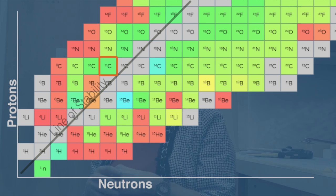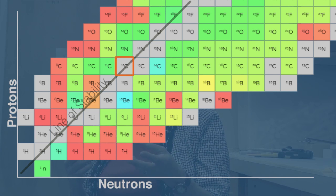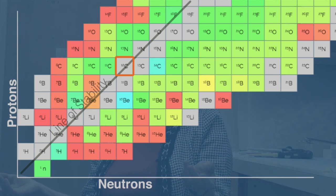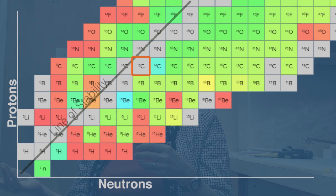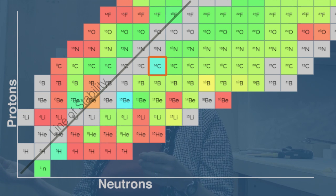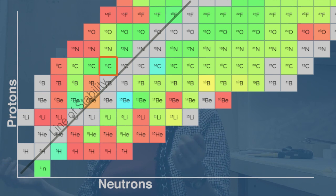So carbon-11 has a 20-minute half-life. Carbon-12 is stable, and it's got six protons, six neutrons, totally balanced. Carbon-13 is stable, carbon-14 isn't stable, but because it has more neutrons, it's more stable than carbon-11, and it's got thousands of years of a half-life.